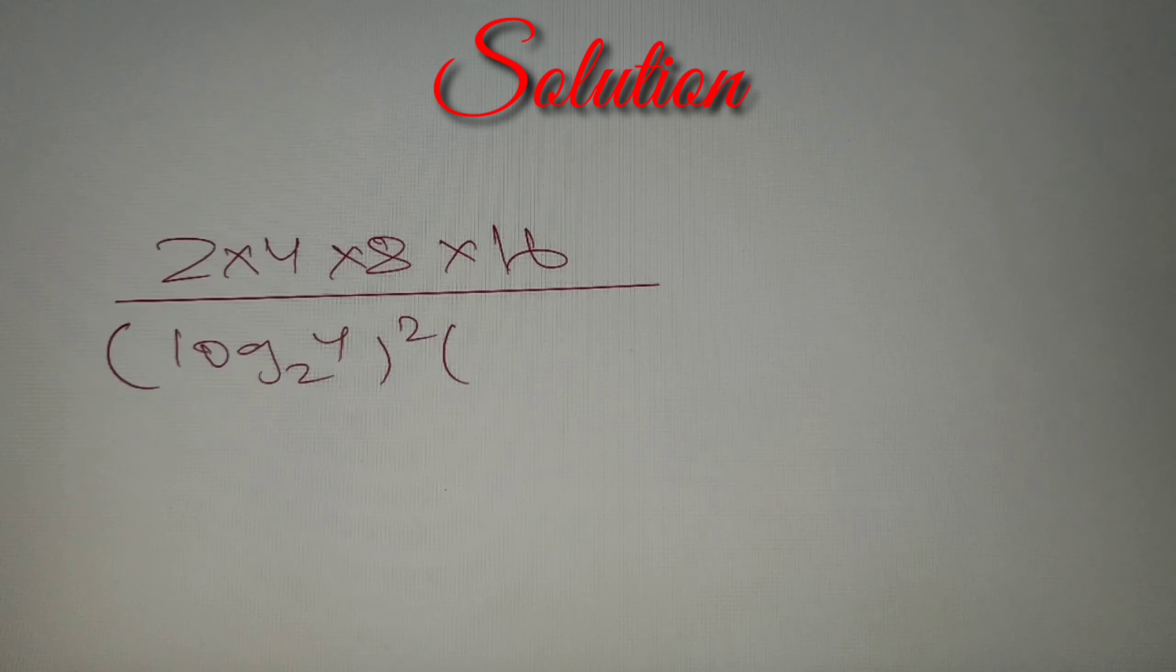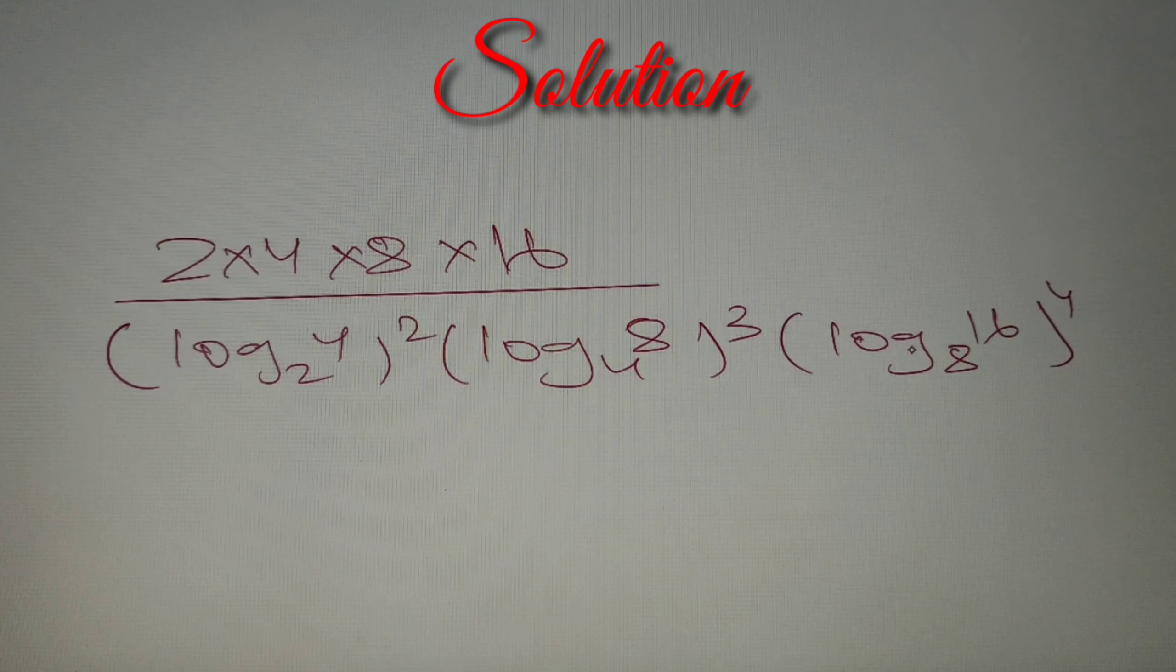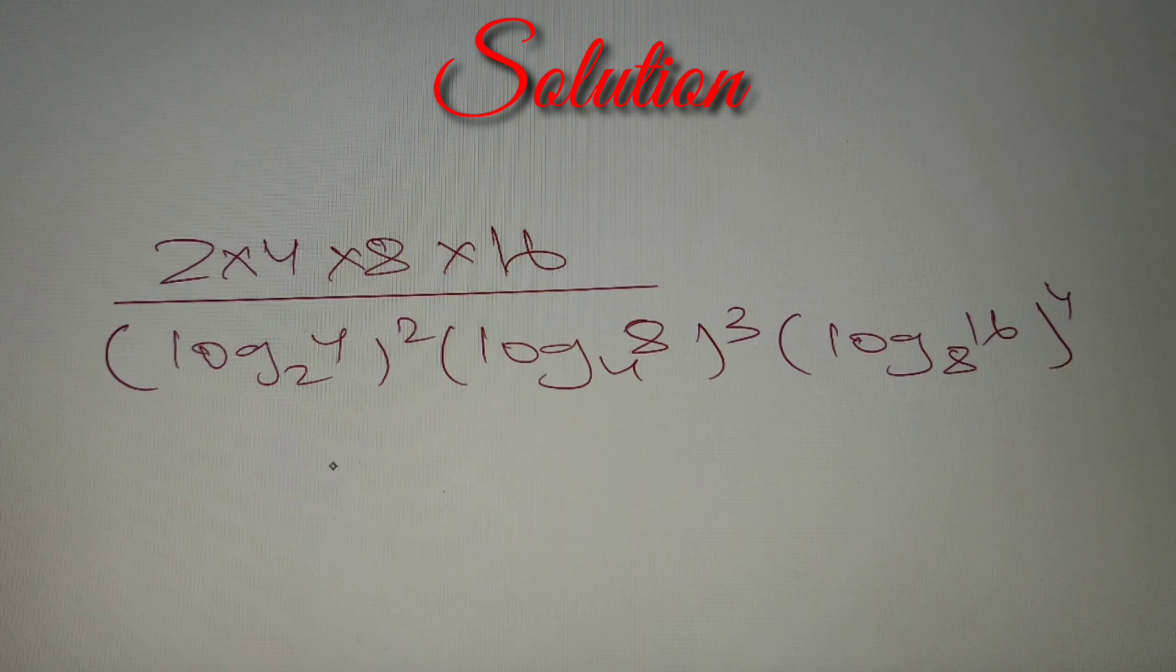According to the given question, we have to find the value of the following: 2 × 4 × 8 × 16 divided by the product of (log 4 base 2)² × (log 8 base 4)³ × (log 16 base 8)⁴. We can solve this question easily by using the properties of logarithm.